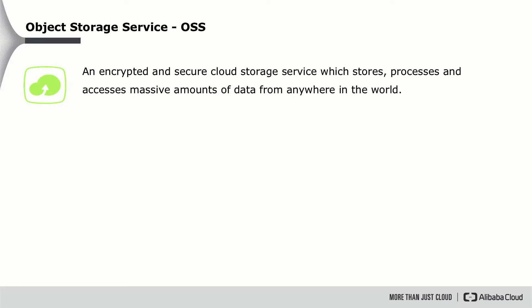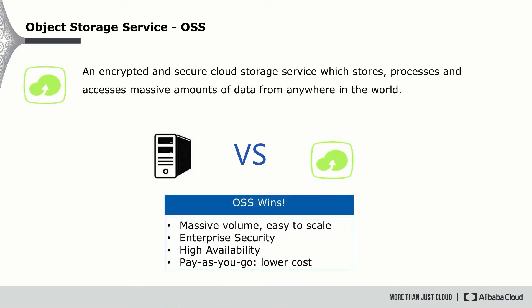So let's see what is Object Storage Service. OSS is an encrypted and secure cloud storage service provided by Alibaba Cloud, which stores, processes, and accesses massive amounts of data from anywhere in the world. Compared to traditional physical storage servers, it provides massive volume and is easy to scale. It also provides enterprise security features, high availability, and a pay-as-you-go pricing model that lowers your cost.